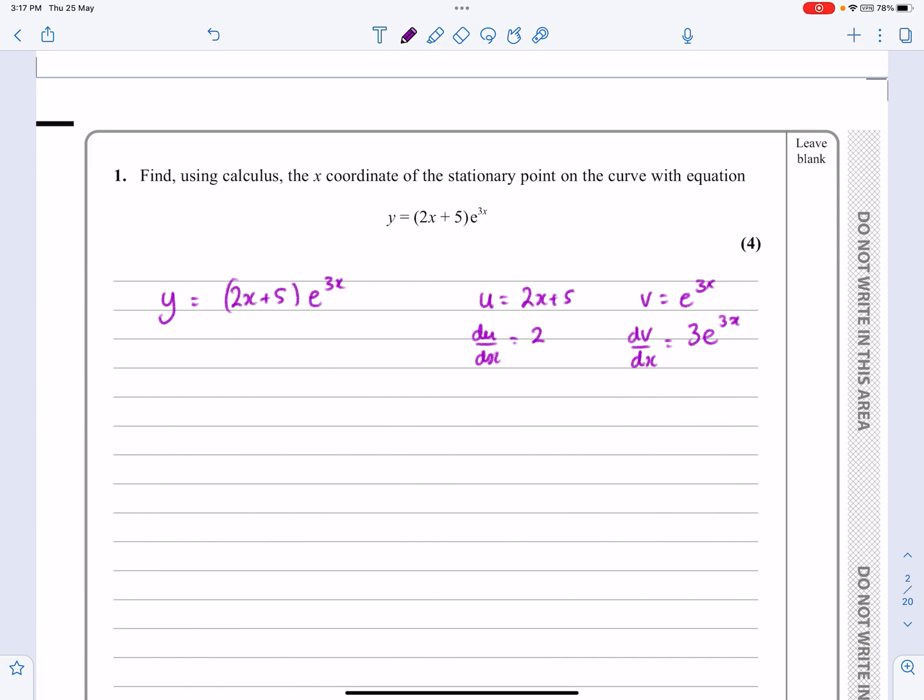The way that I write down the product rule is I say that dy/dx is equal to u(dv/dx) + v(du/dx). Some people might use u' and v' instead of the differentials there, absolutely fine, whatever you are happy to do. The reason I've got it like this and set it out like that is when I'm doing u(dv/dx), I know from my diagram it's always going to be that bit there, which means I'm less likely to make any sort of silly copying errors that generally I do tend to do when I'm doing this work.